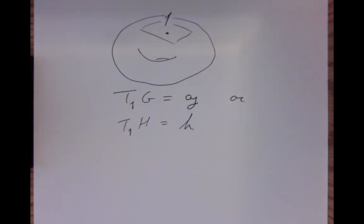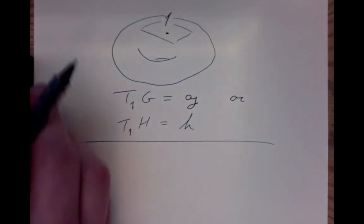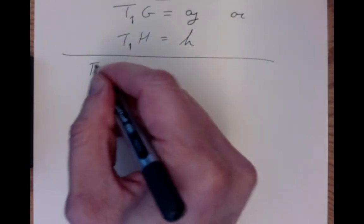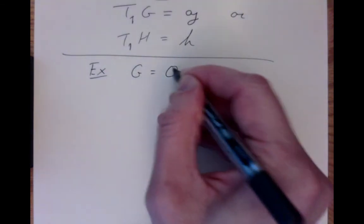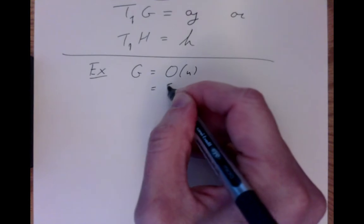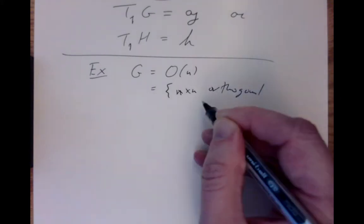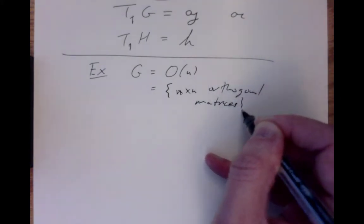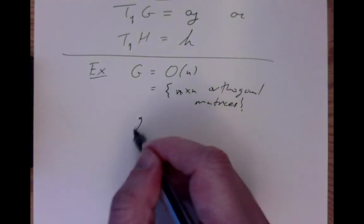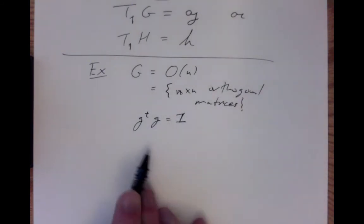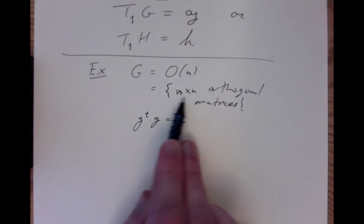Let's look at some examples where we can calculate the tangent spaces of some groups at the identity. A nice example: let G be the orthogonal group — the n×n orthogonal matrices with real entries. A matrix is orthogonal when it satisfies gᵀg = I. Following the tradition in Lie group theory, we usually write n×n matrices thinking of them as group elements with lowercase g.